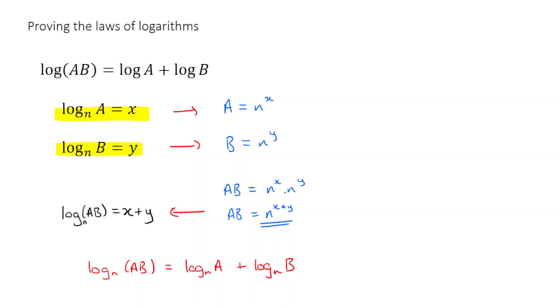So what's the key to this? You take log a and log b and call them x and y respectively, rearrange into exponential form, multiply them together, and go back into logarithmic form.